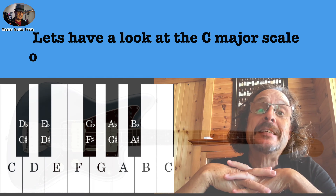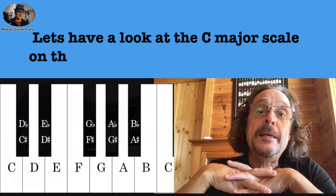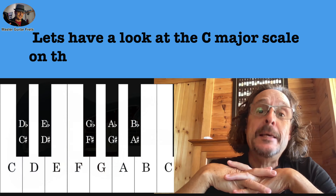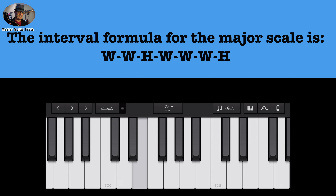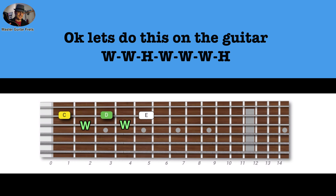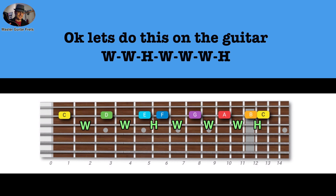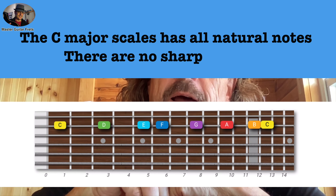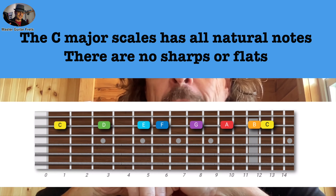Let's have a look at the C major scale — on the keyboard first, then the guitar. The major scale has seven notes, all natural — there are no sharps or flats. The interval formula for the major scale is... You can clearly see on the fretboard all natural notes, no sharps or flats.